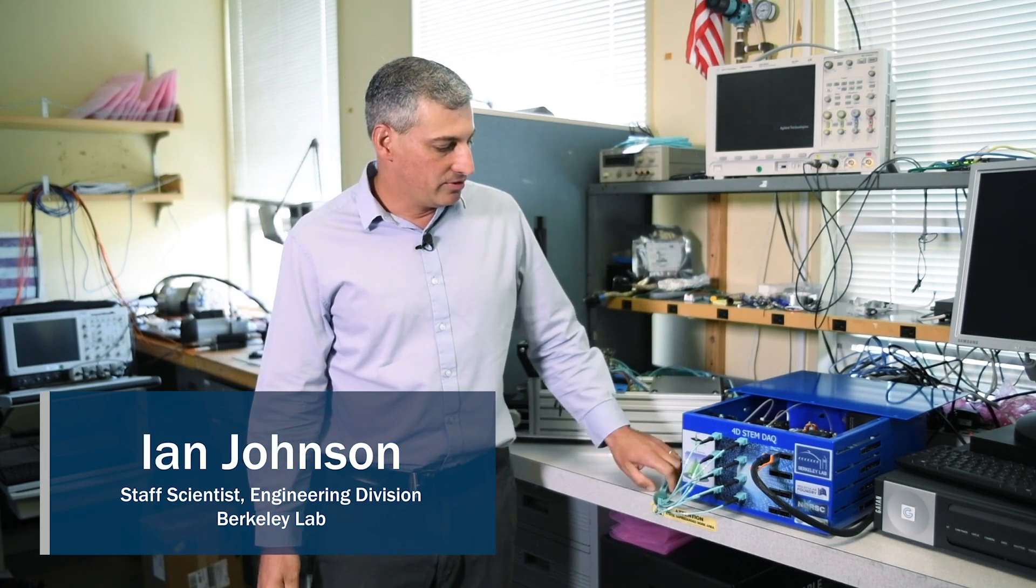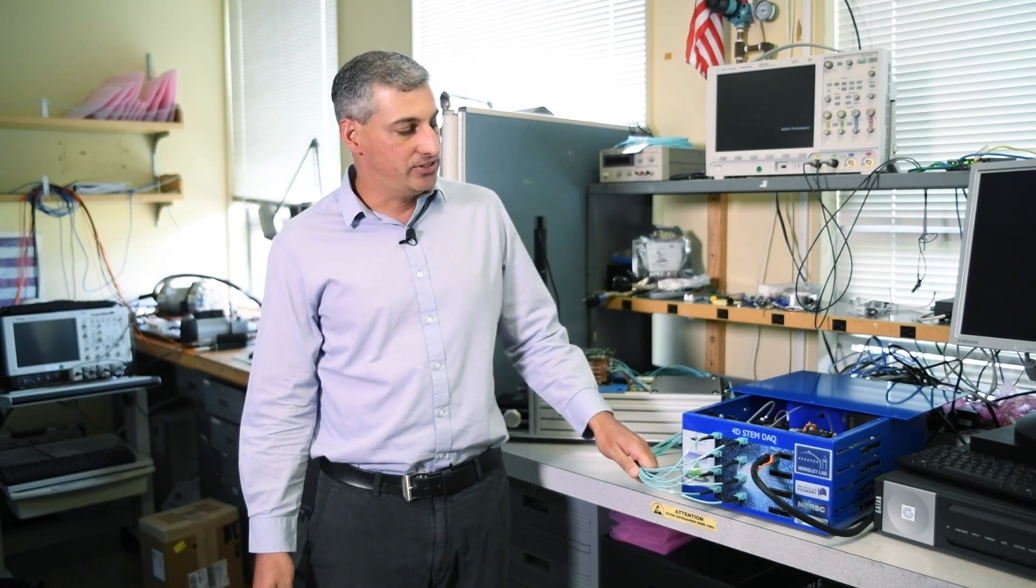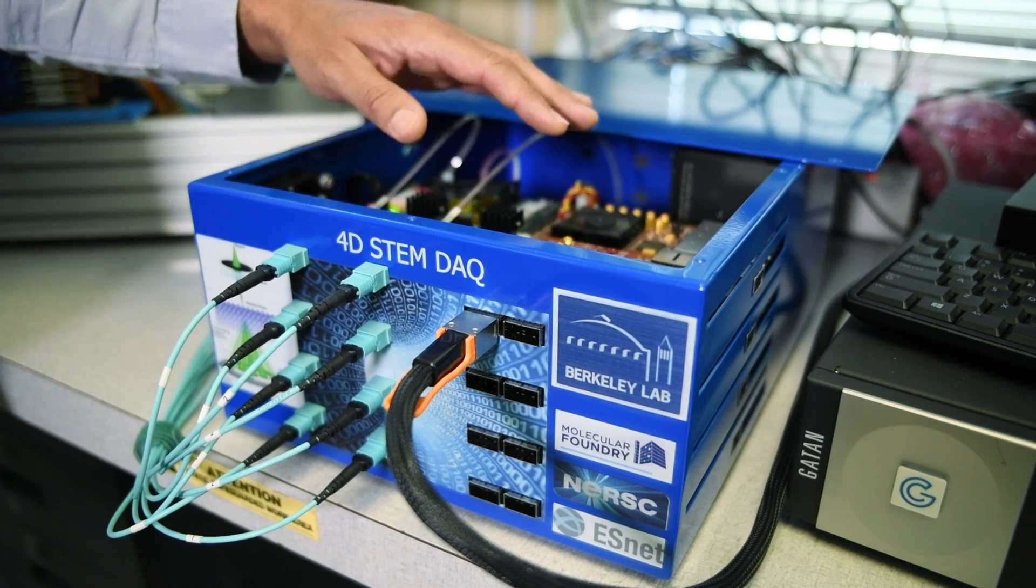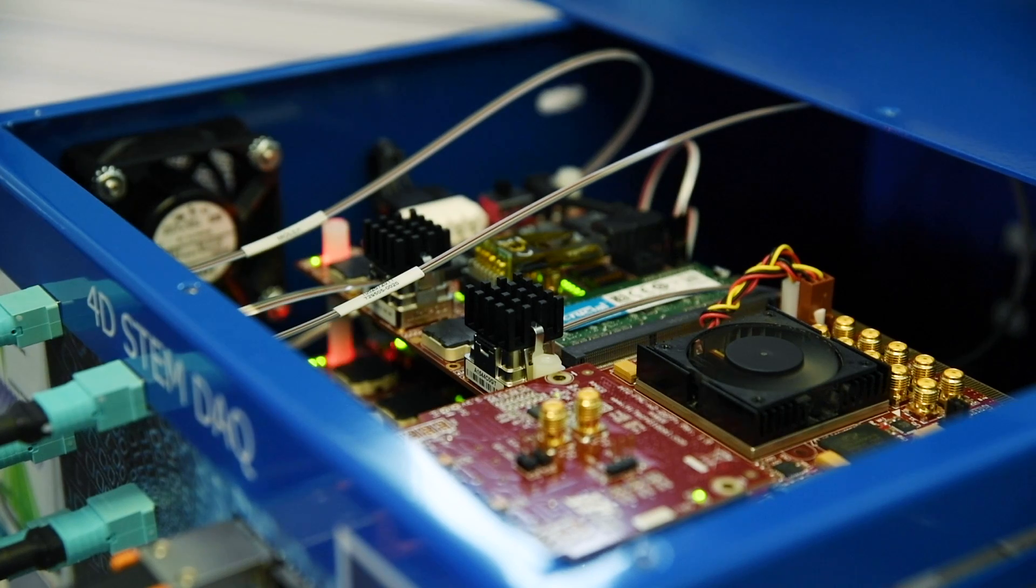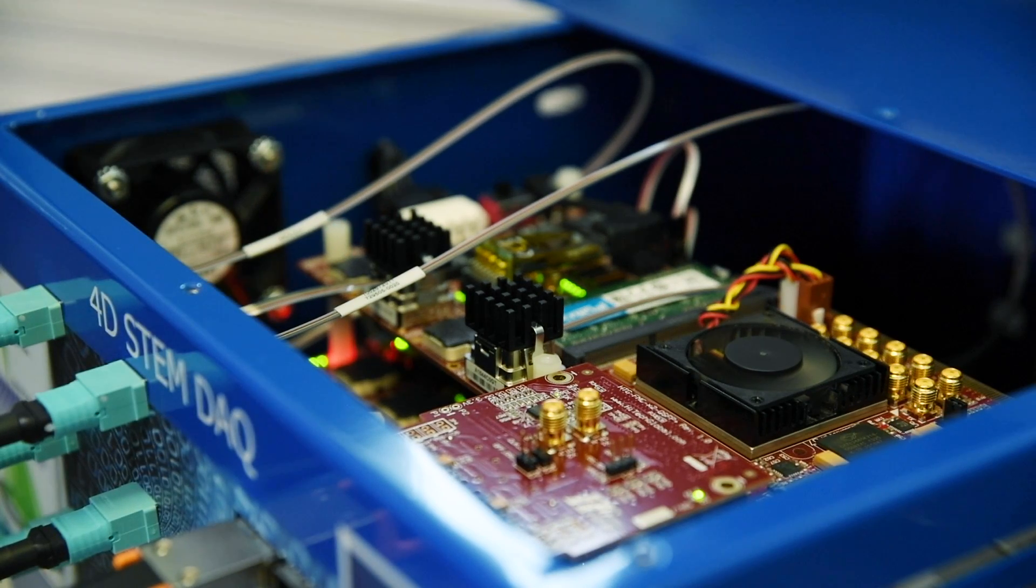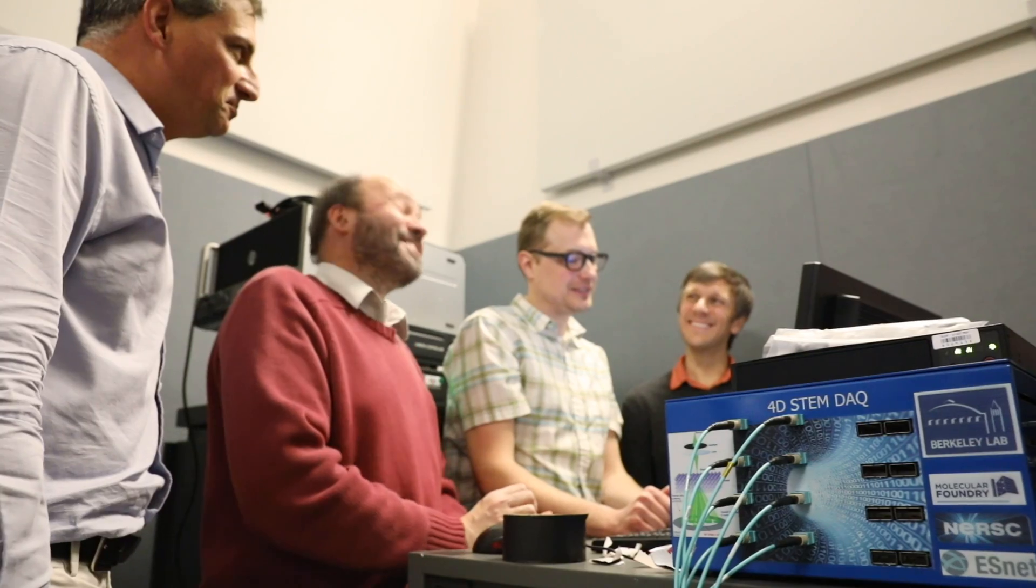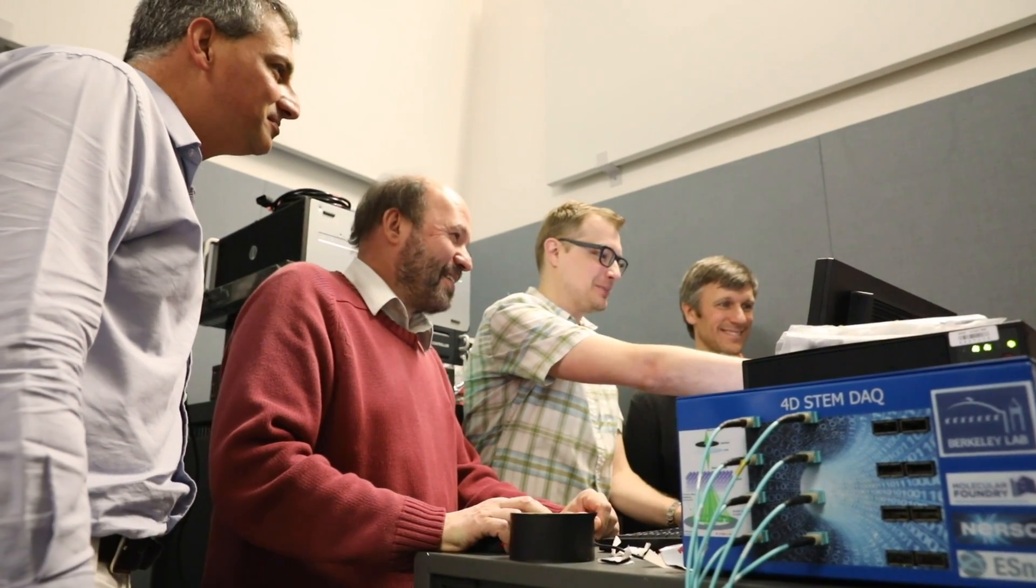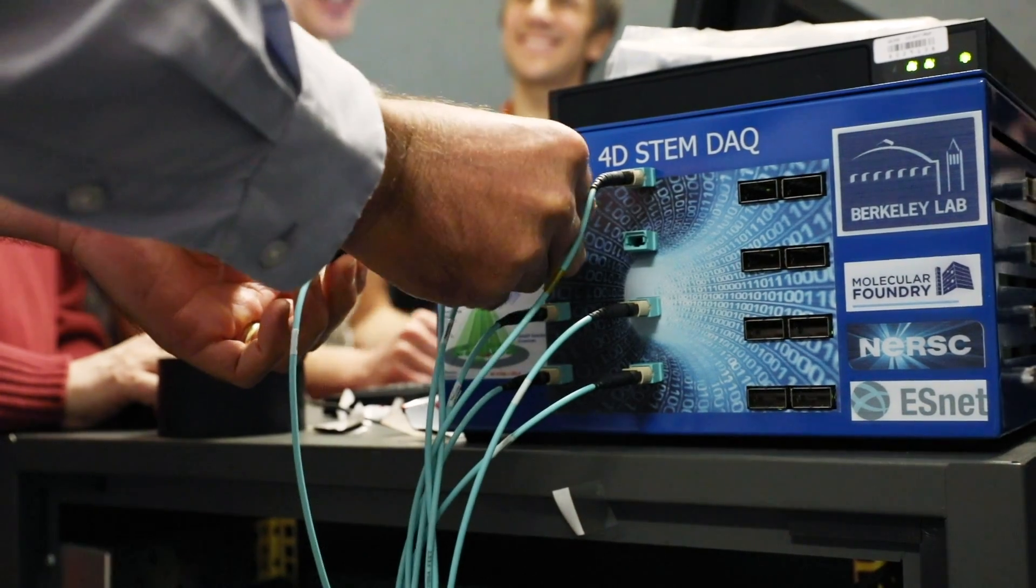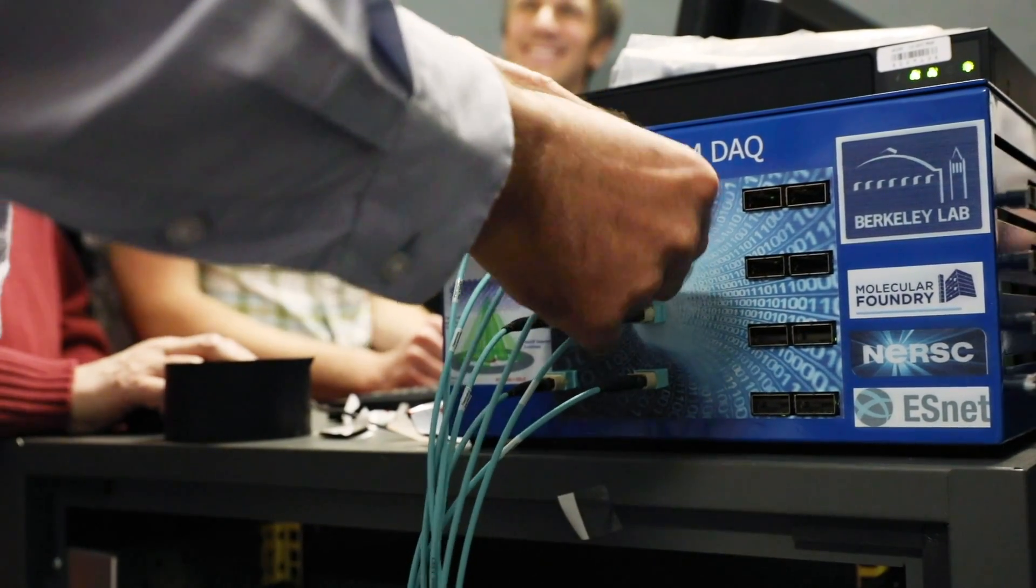The data is digitized in the camera and transferred over about 100 fiber optic connections to the data acquisition system. In the data acquisition system, the four field programmable gate arrays organize the data into images and transfer it onto the network. This detector will generate an enormous amount of data. It's equivalent to watching about 60,000 HD movies simultaneously.